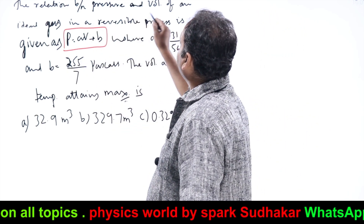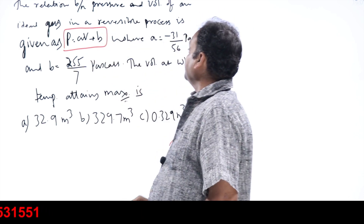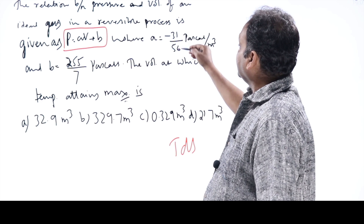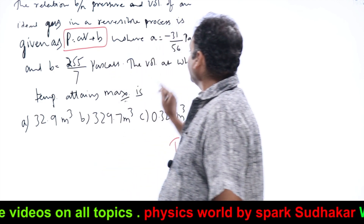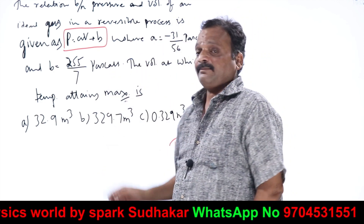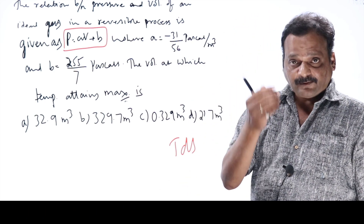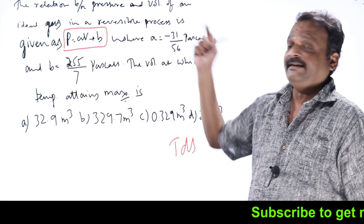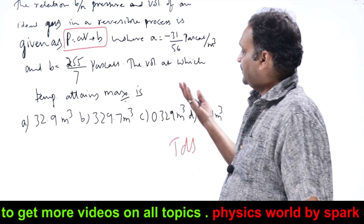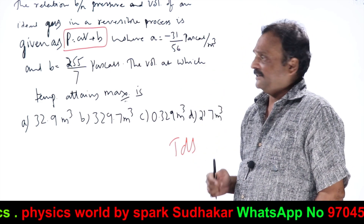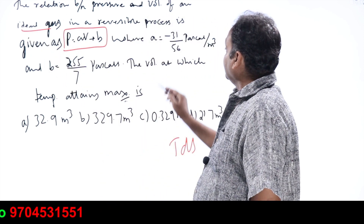This is a previous year question. The relation between pressure and volume of an ideal gas in a reversible process is given as P = AV + B, where A is minus 31/56 Pascal per meter cube and B equals 255/7 Pascals. We need to find the volume at which temperature attains a maximum. Temperature is not given explicitly, nor is the process type — it is a reversible process with an ideal gas, and a relation between pressure and volume is given.